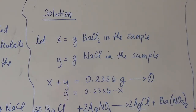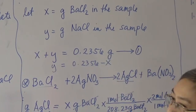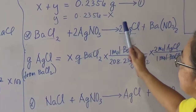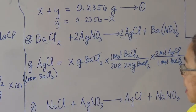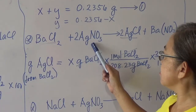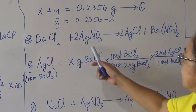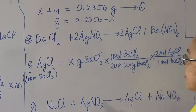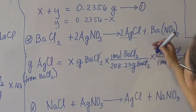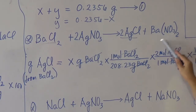Or you can do it the other way: x = 0.2356 − y. Now, since the precipitate is formed from both barium chloride and sodium chloride, we will write the chemical reactions. The reaction between barium chloride and the precipitant — assumed to be sulfate — yields the precipitate and barium nitrate. The precipitate forms because barium nitrate is soluble in water, and all nitrates are soluble.